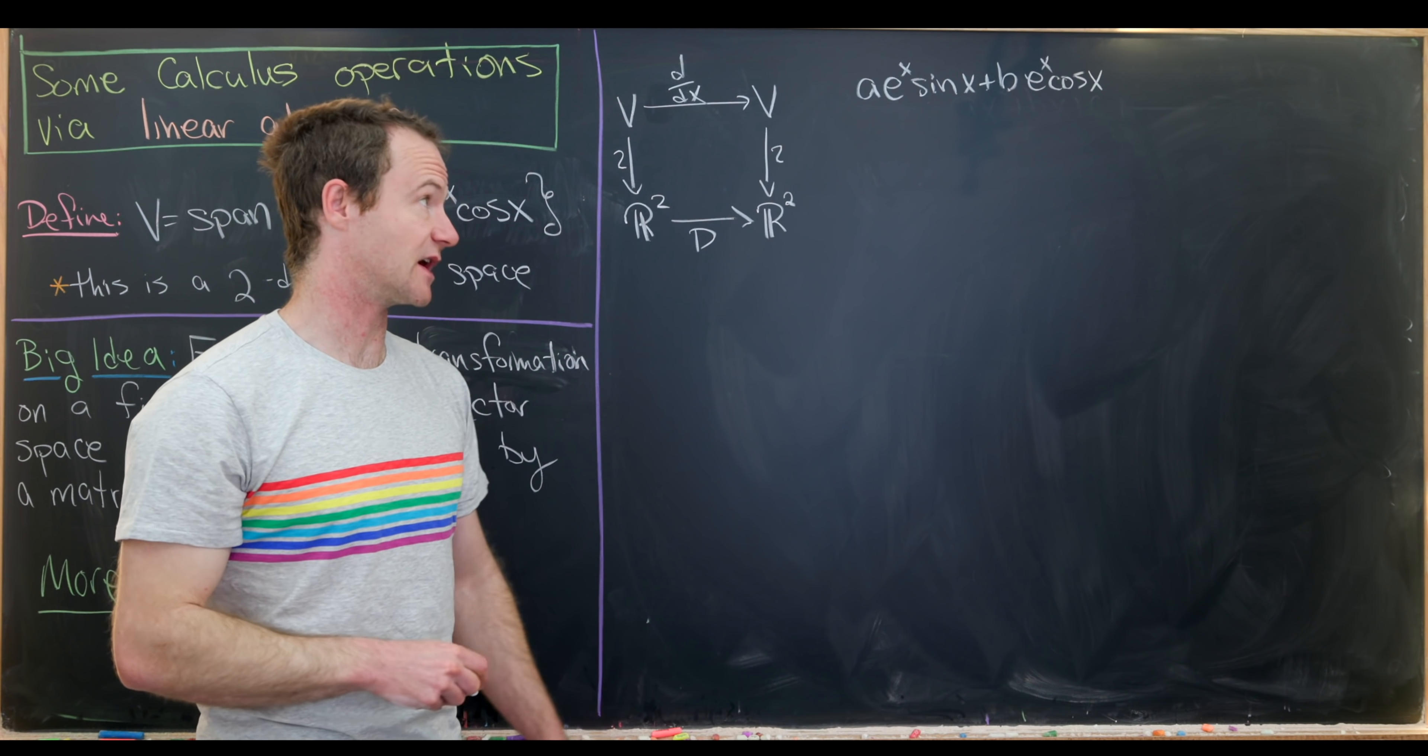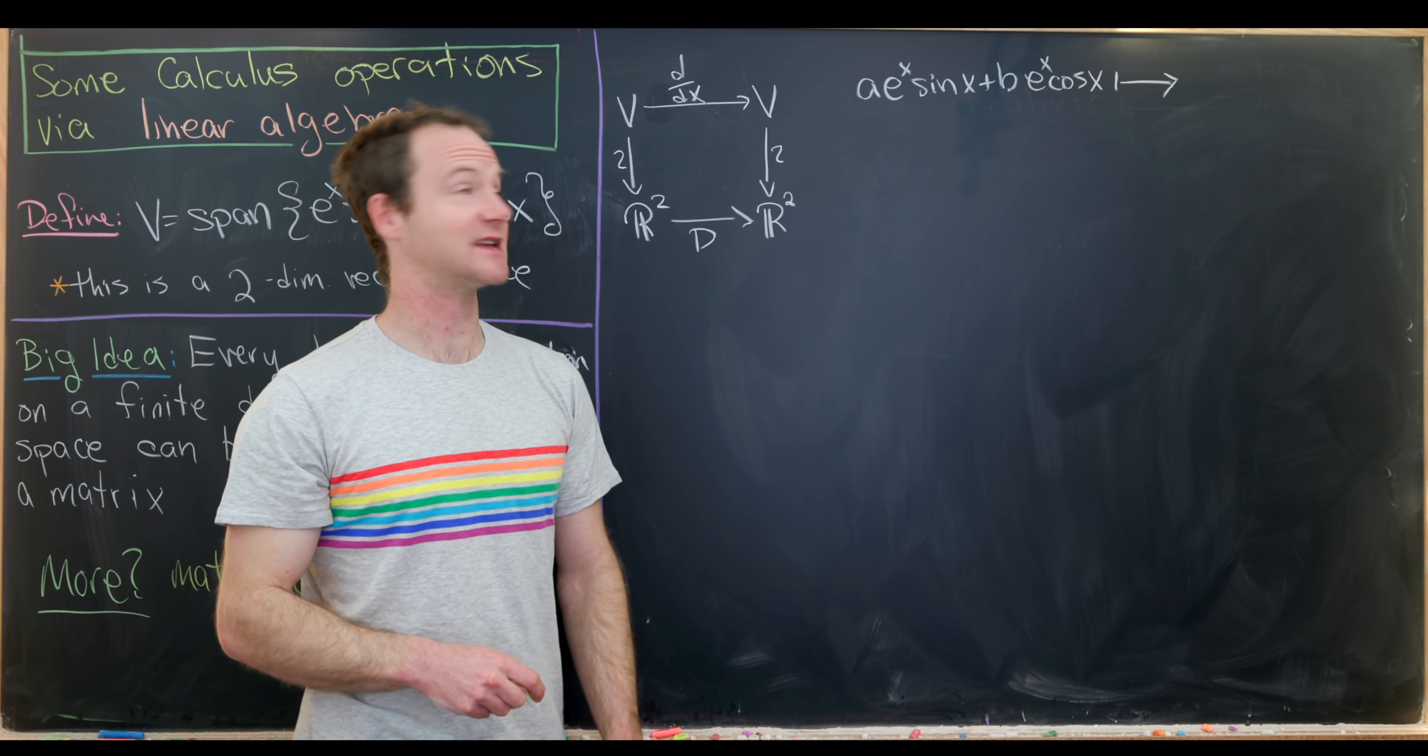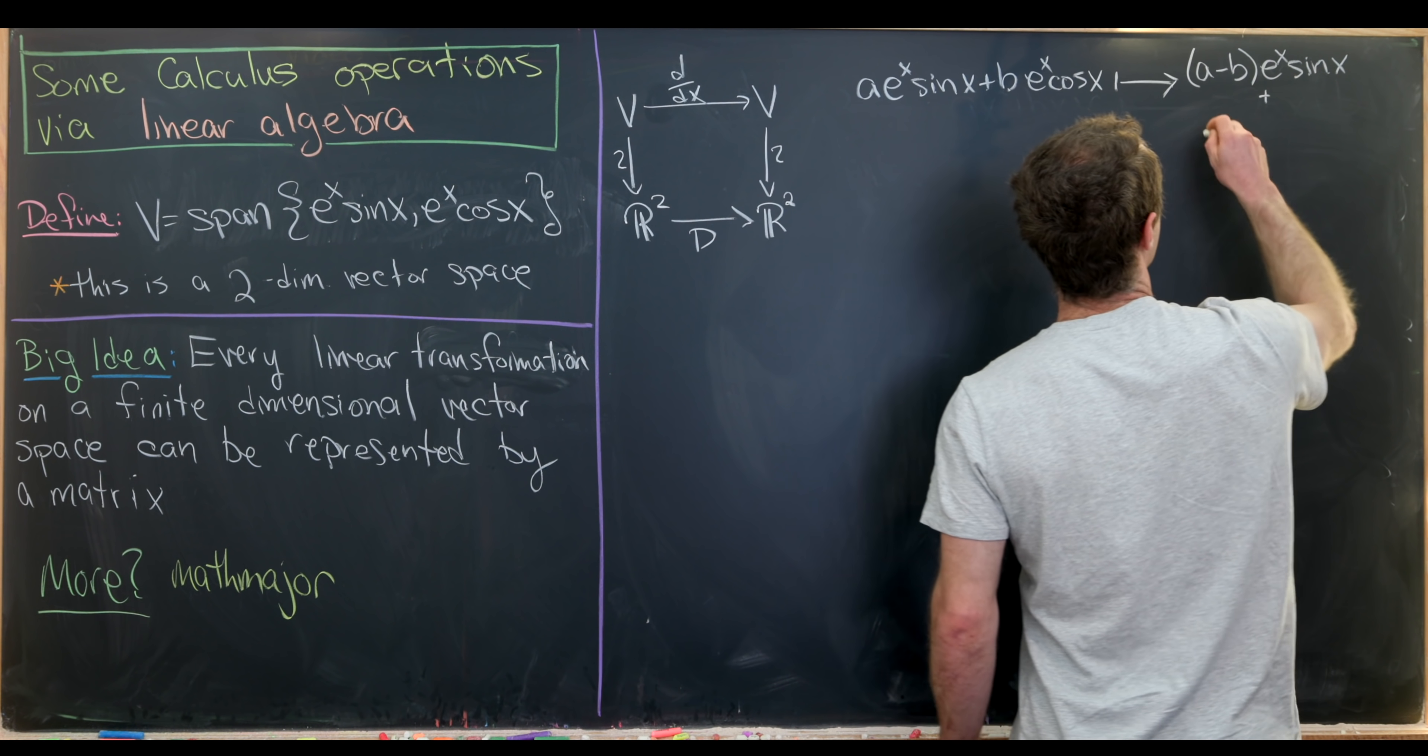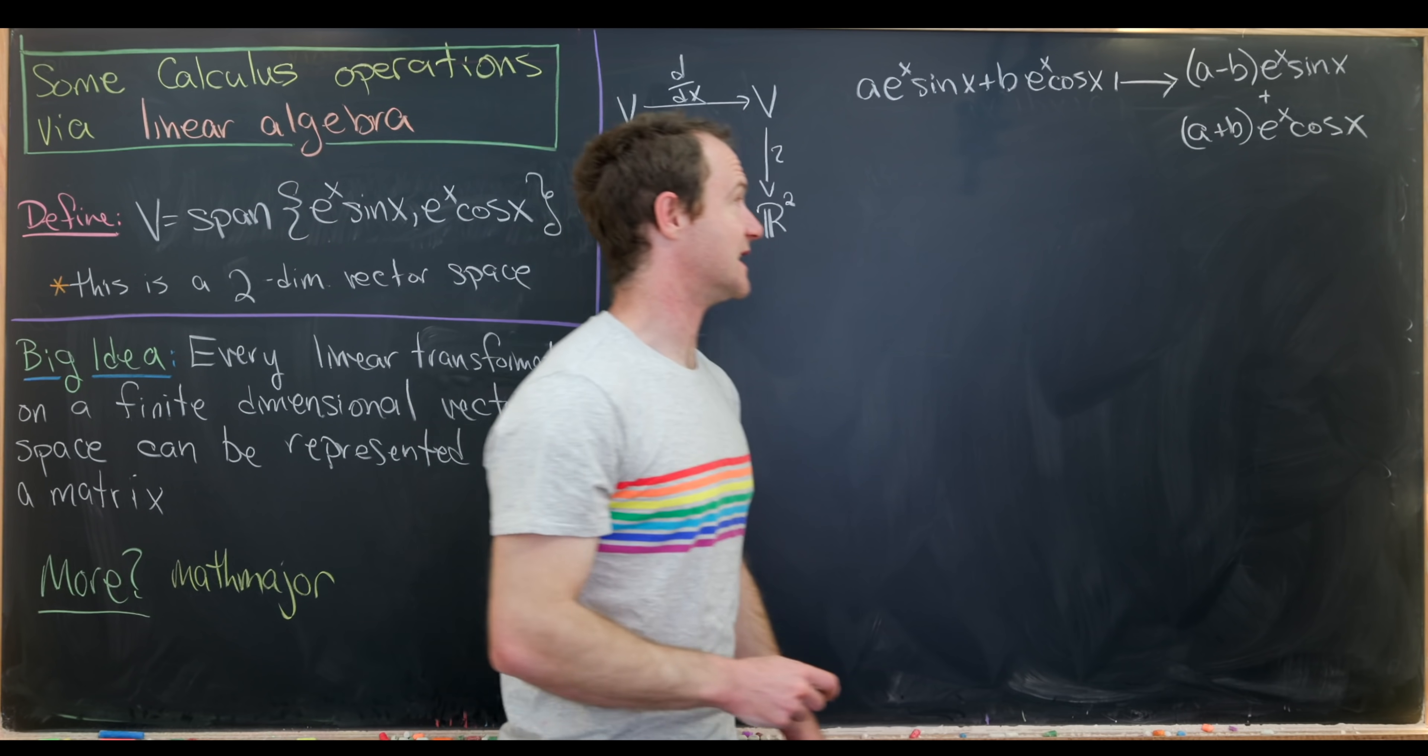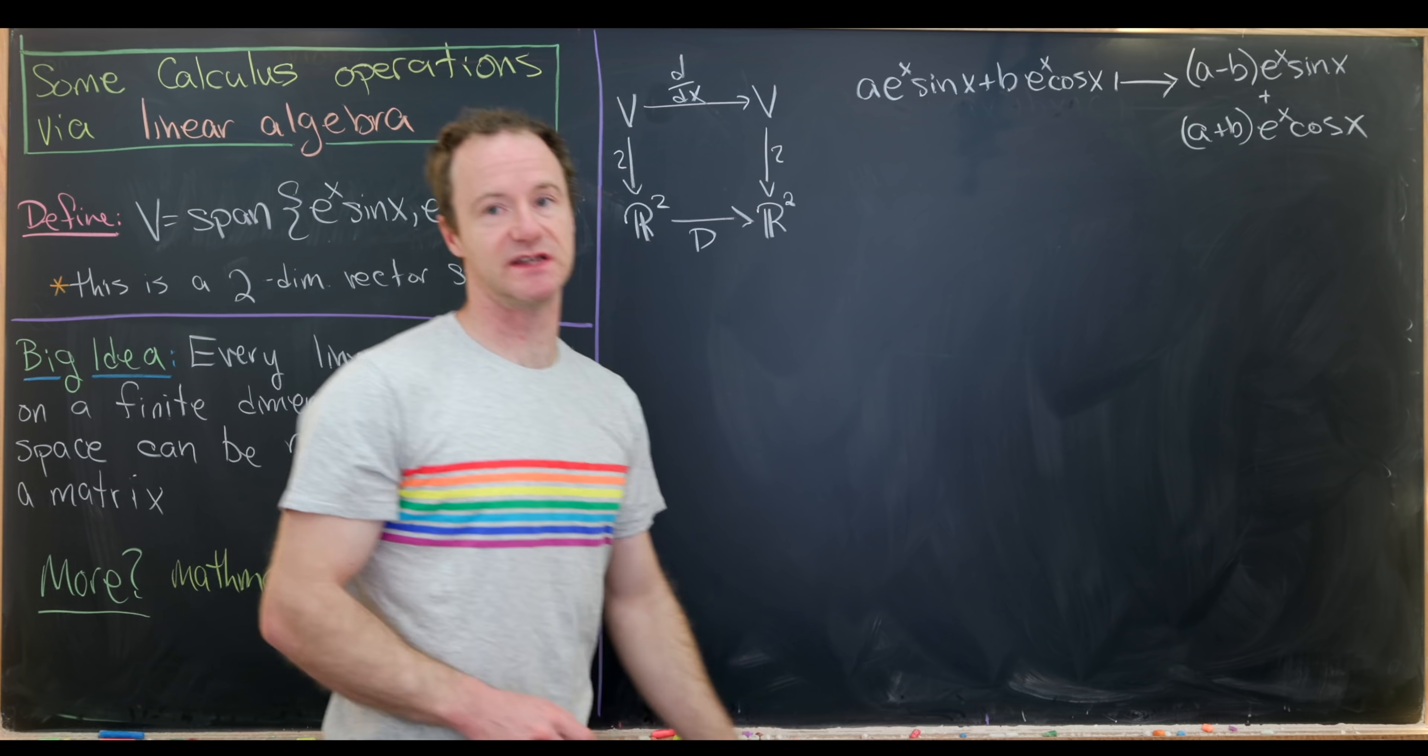Notice an arbitrary element from v looks like this. We have a e to the x sine x plus b e to the x cosine x. So like I said, that's an arbitrary element from v. It's a linear combination of those two vectors. Now, if we take the derivative here, we have to be a little bit careful with the product rule because we have e to the x times sine x and e to the x times cosine x. But what we'll end up with is the following. We'll have a minus b e to the x sine x plus a plus b e to the x cos x.